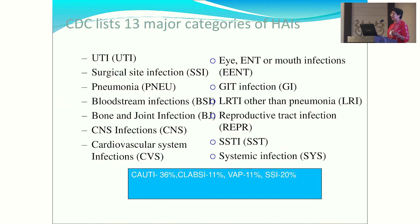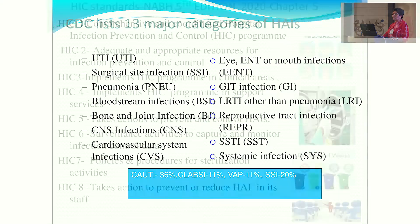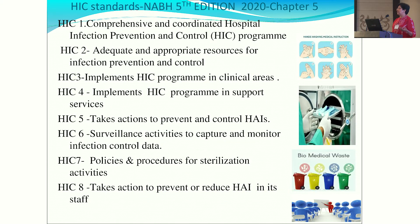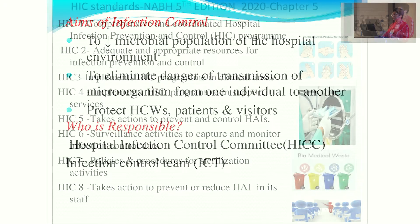CDC has listed 13 categories of hospital-acquired infection; I will focus on four. CAUTI is number one, comprising about 36%, followed by CLABSI. VAP accounts for 11% and surgical site infection 20%. Every hospital — not just medical colleges, but private hospitals seeking NABH accreditation — should have an infection control officer and infection control team, and should formulate a committee policy implementing all NABH standards.